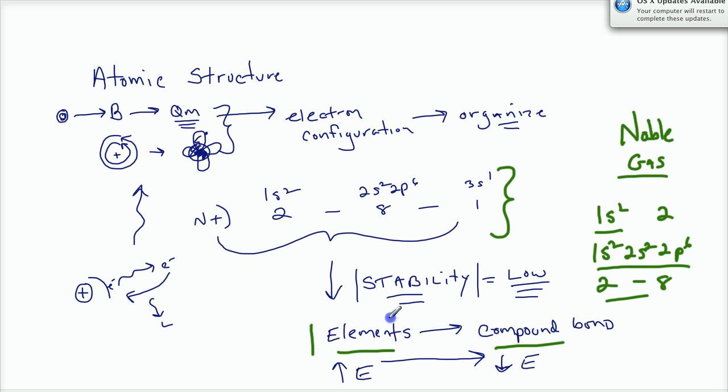So we noticed that sodium likes to become sodium plus. And we learned that happens in atomic structure by losing an electron. And so when sodium bonds, it does so because it becomes Na+. And we learned that Na+ is as stable as neon.